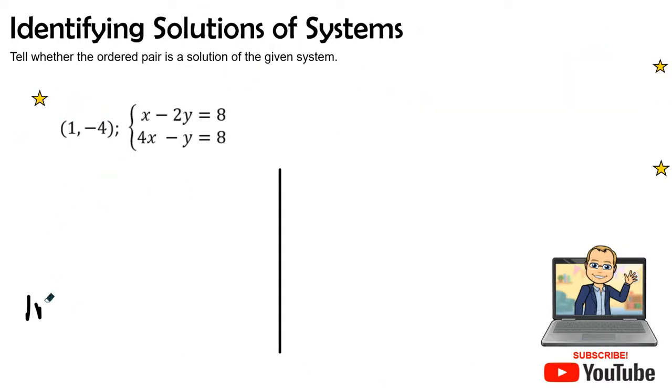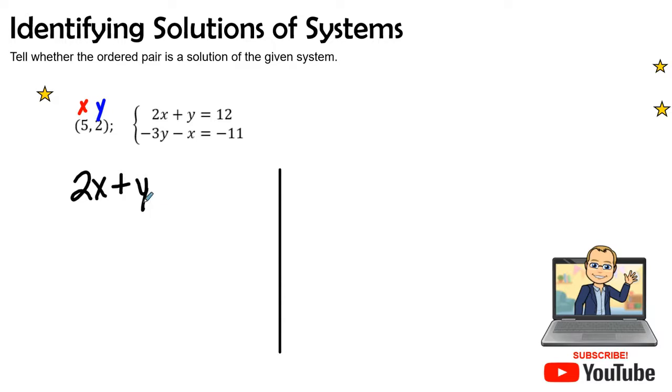We have one more example and then we will conclude this video. You guys are going to be pros at this by the time you finish. Here we go. Our coordinate, the x coordinate is 5, the y coordinate is 2. We have 2x + y = 12 and -3y - x = -11. Let me clean up this y here just a little bit.